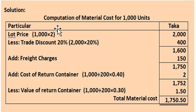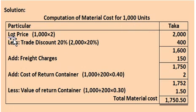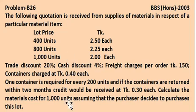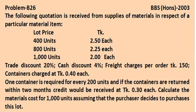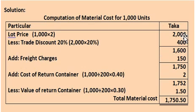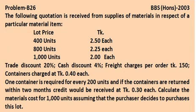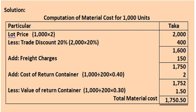The solution: computation of material cost for 1,000 units. Starting price for 1,000 units, then applying the discount - less 20% discount on the lot price, then adding the container deposit cost to arrive at the total material cost.